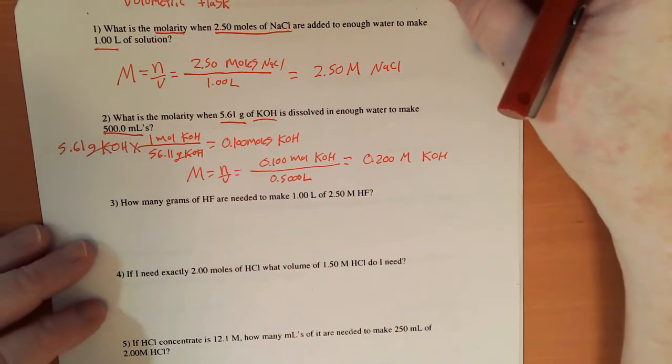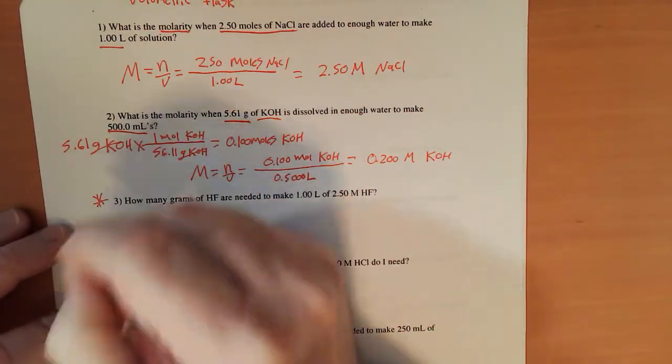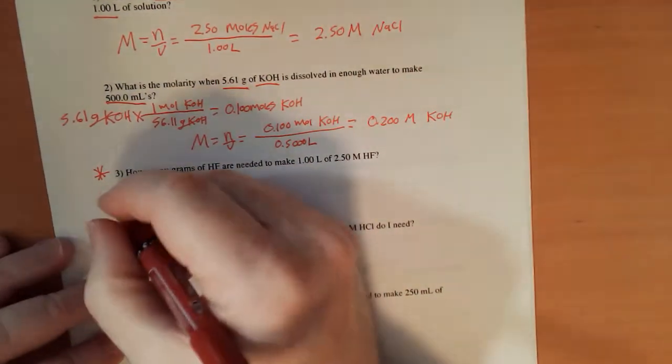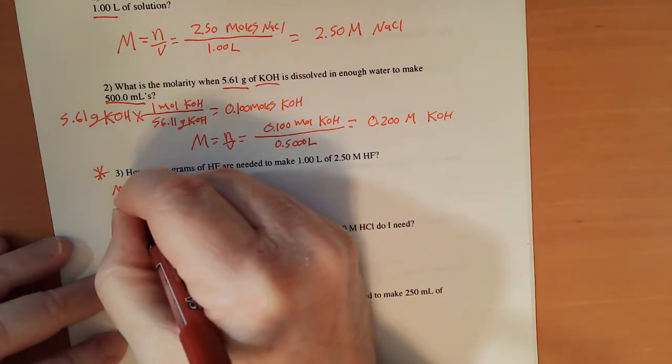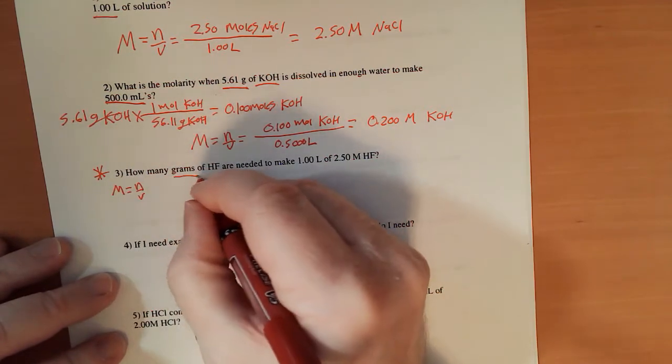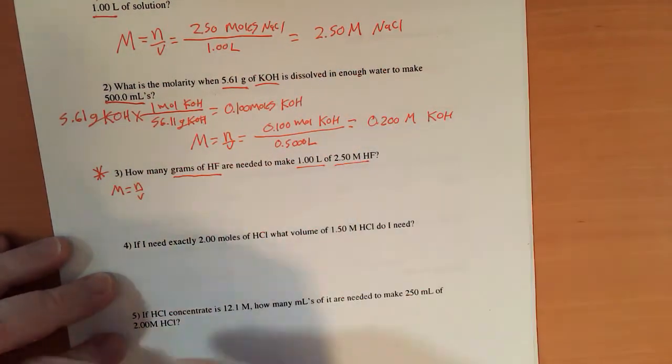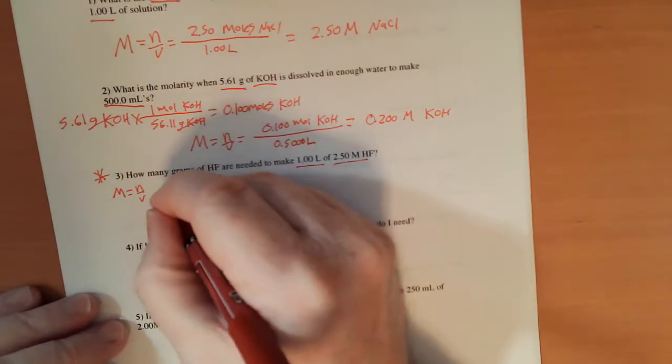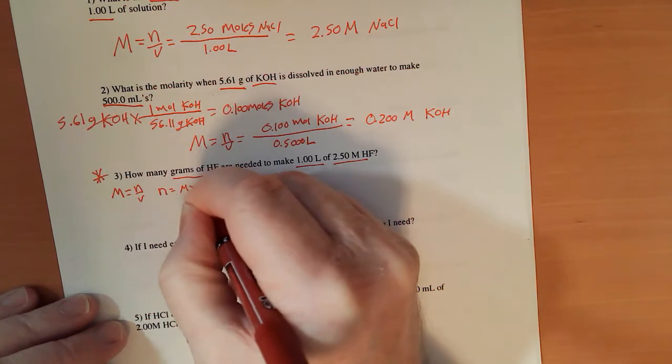Now working the other way, this is the very common problem. I'm going to tell you this is what you're going to have to do in laboratory situations. So if molarity is moles over volume, and I want to know how many grams of HF are needed to make a liter of a 2.50 molar solution, I find the moles, which is molarity times volume.